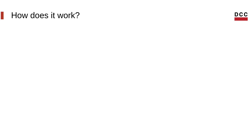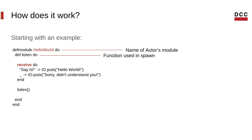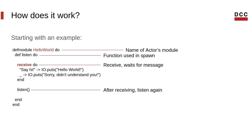So how does it work? Let's start with a small example: the Hello World actor. Here we define the name of the actor's module and right under it we define a function that we can use when we spawn our actor. The function is extremely simple — it receives a message, the receive command waits until a message arrives, and after it arrives it pattern matches to the two options that are there, does a command, and finishes. At the end we ask it to rerun the function so that we can listen to multiple messages.